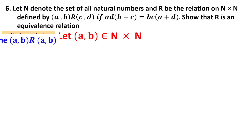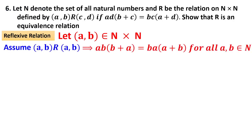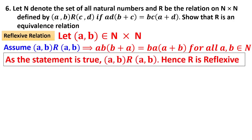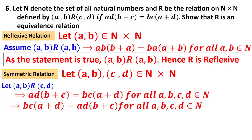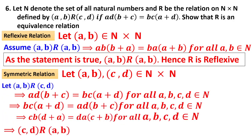For reflexive: take (a,b) ∈ N×N and check that (a,b) is related to (a,b). Using the definition, a·b·(b+a) = b·a·(a+b), which is clearly true. So R is reflexive. For symmetry: take (a,b) and (c,d) and assume (a,b)R(c,d). By modifying the terms, we can verify that (c,d) is also related to (a,b). Therefore R is symmetric.